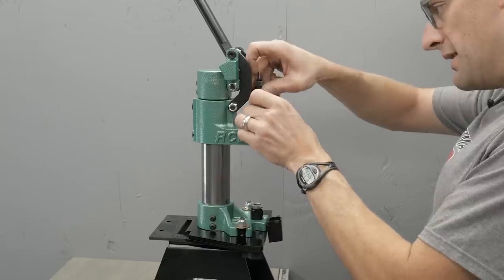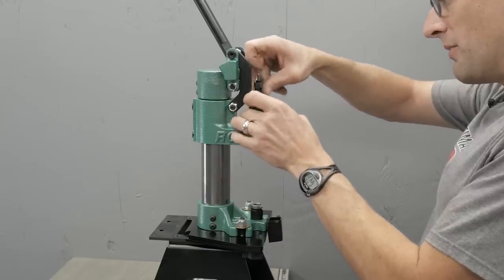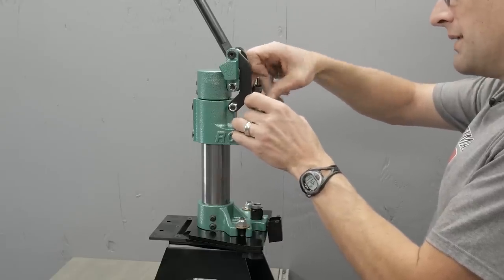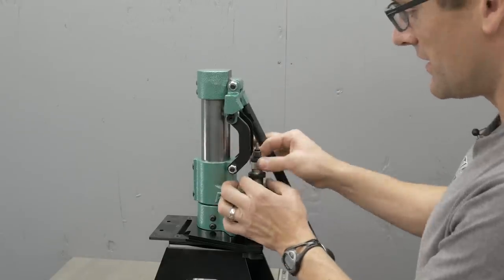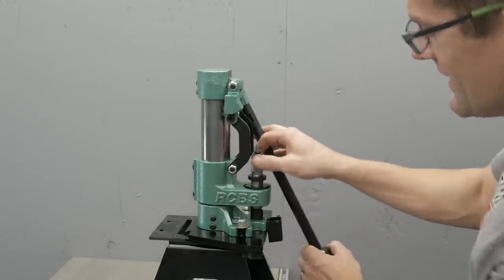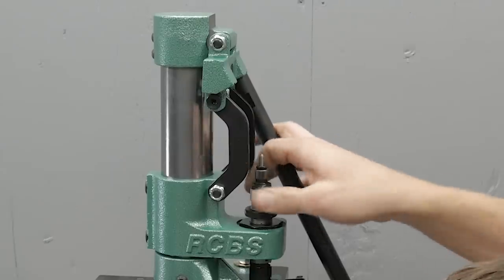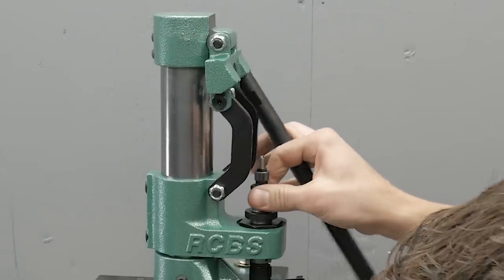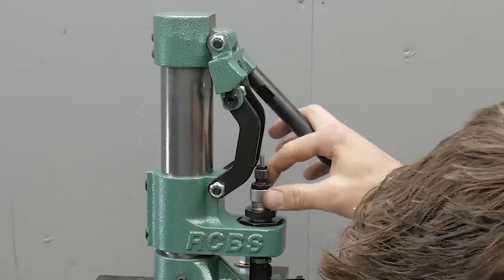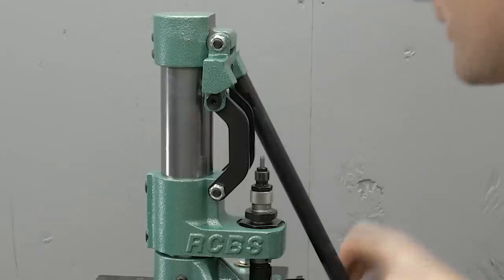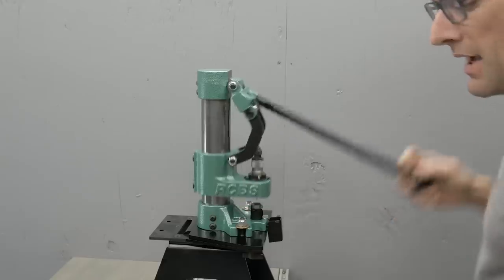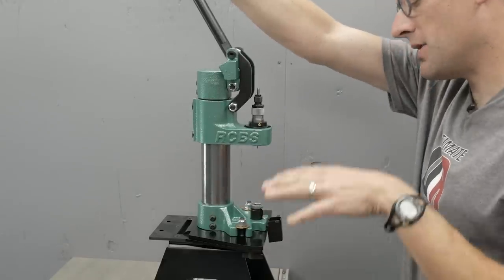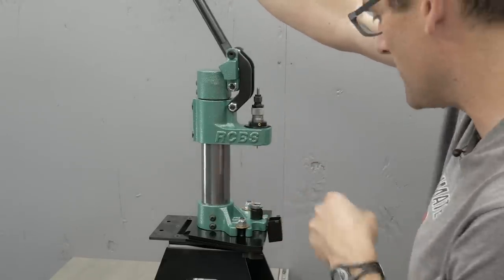So I'm going to screw a die in here. This is the gold metal 6.5 Creedmoor Sizer D Primer. I'm just going to lower the die. That sounds kind of funny. This is totally awesome. Doing something completely different, basically. We're going to give this a little bit of a cam over and then we're going to give the lock ring a finger tighten. Now let's size some brass, and we're going to use our case gauge to make sure our sizing is good.